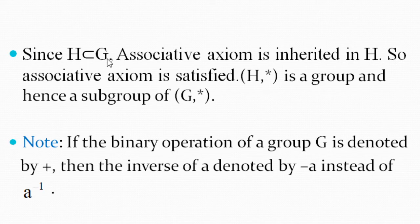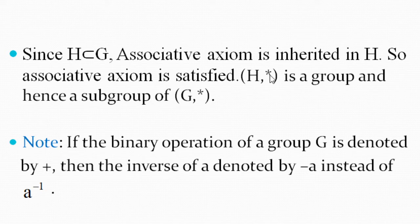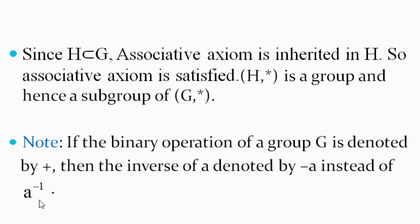Since H is contained in G, the associative axiom is also inherited in H and is satisfied. So H satisfies all four axioms of group — closure, associativity, identity, and inverse — and hence H is a group, making it a subgroup of G. Note: if the binary operation of G is denoted by plus, then the inverse of A will be −A instead of A⁻¹.